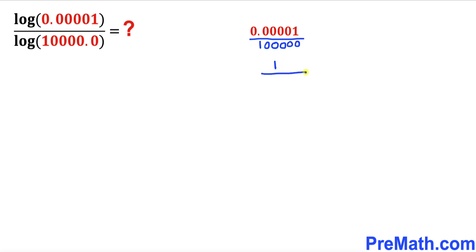Therefore, this could be written as 1 divided by 1 with 5 zeros, in other words 100,000. And now we know that 100,000 could be written as 10 to the power 5, since there are five zeros.